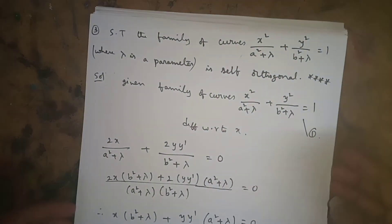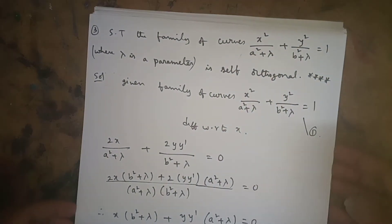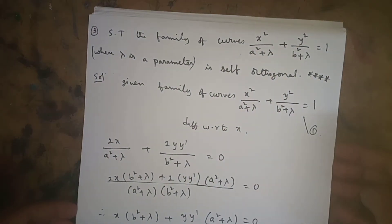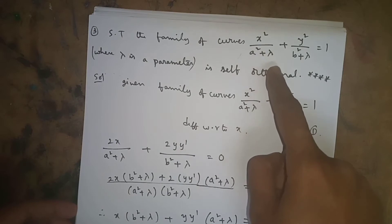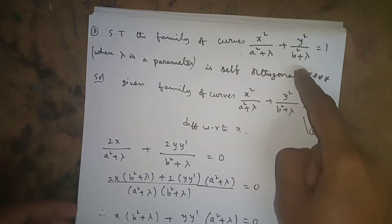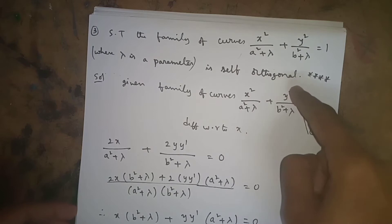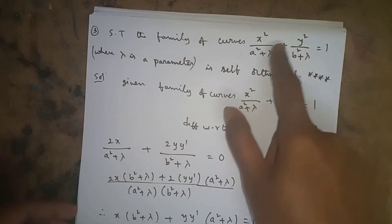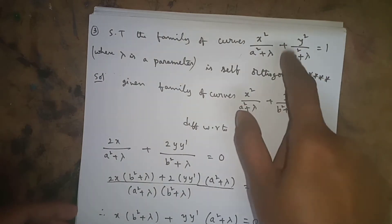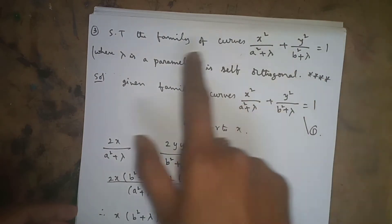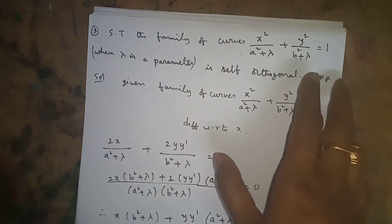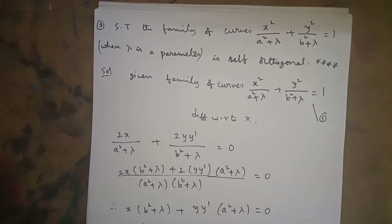Hello everyone, we will do another problem in orthogonal trajectories, Cartesian form. The problem is: show that the family of curves x²/(a²+λ) + y²/(b²+λ) = 1 is self-orthogonal. We have to prove this family of curves is self-orthogonal, where λ is a parameter. This is a very important question, repeatedly asked.